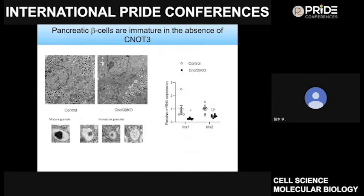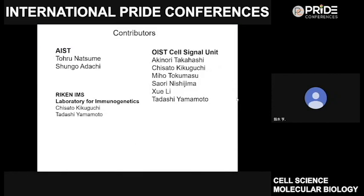When we suppressed expression of the CCR4-NOT complex in pancreatic beta cells, maturation of pancreatic beta cells was insufficient, and consequently these mice develop diabetes. Therefore, in almost all mammalian tissues, the CCR4-NOT complex-dependent mRNA decay plays a critical role to maintain tissue development and homeostasis. I'd like to thank all the collaborators. Thank you very much for your attention.